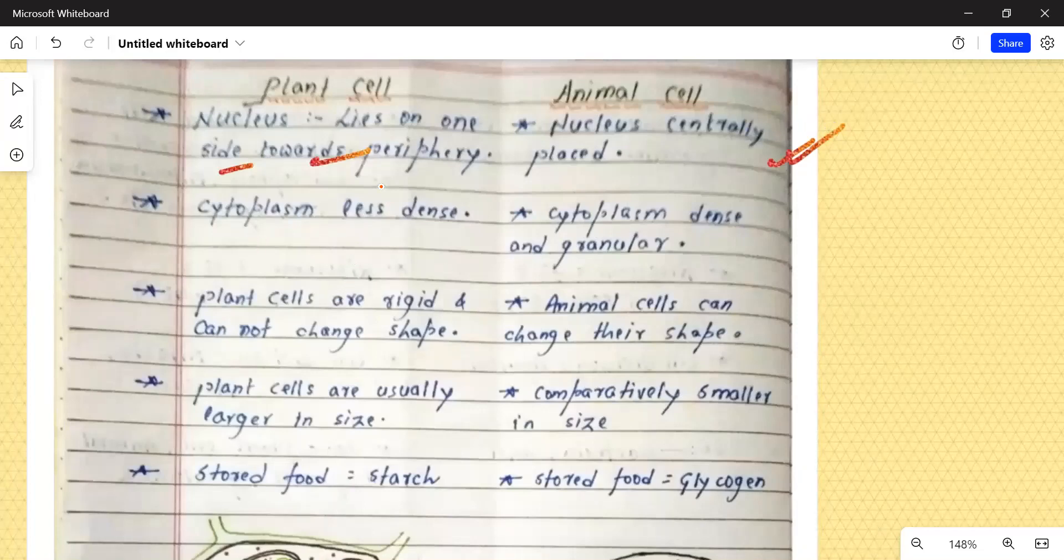Plant cell ka cytoplasm aapka kam dense hoti hai, less dense hoti hai, jyada dense nahi hoti hai, but animal cell ka jo cytoplasm hoti hai, woh jyada dense hoti hai, aur granular hoti hai. That means ki us mein chhote-chhote grain-like structures dikhayi padte hai.